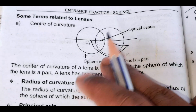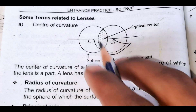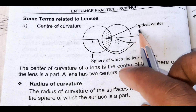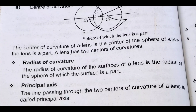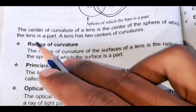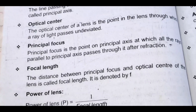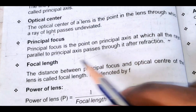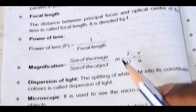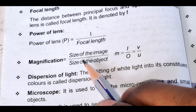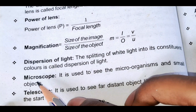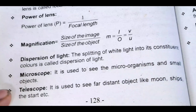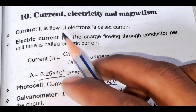For lenses: center of curvature, optical center, principal axis, principal focus, focal length, power of lens, magnification. Magnification equals size of image divided by size of object. Dispersion of light, microscope, telescope.